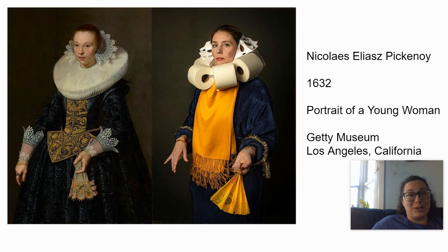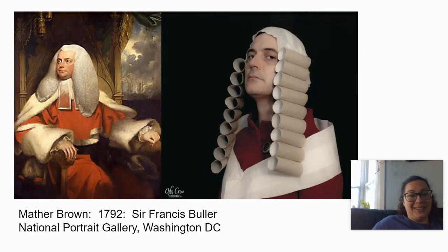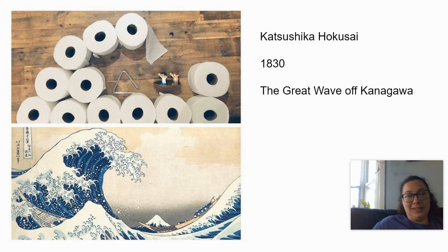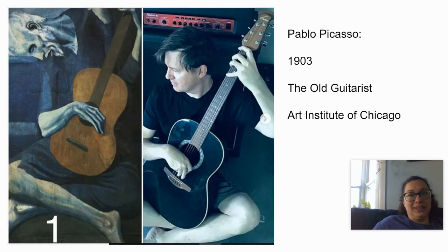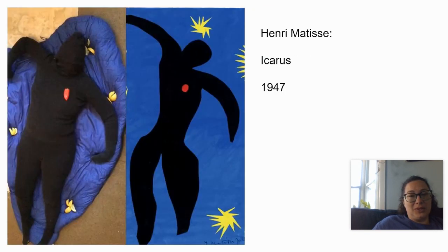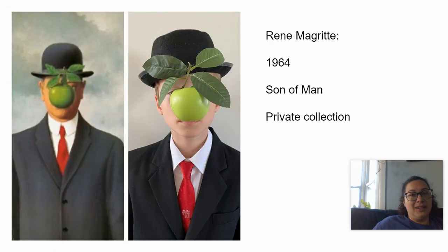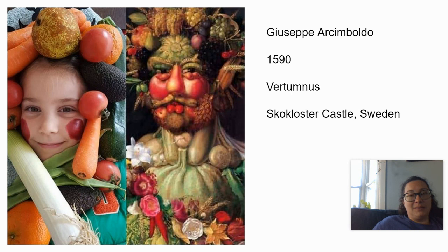This one's funny — using toilet paper is the big thing. Nicolai Elias Picanoy, Portrait of a Young Woman. Sir Francis Butler using toilet paper rolls. We've got Hokusai's The Great Wave using toilet paper. Keith Haring, created by doing different poses. Pablo Picasso's The Old Guitarist. Henri Matisse — that one's scary, they cover their face there. Rene Magritte. And some Giuseppe Arcimboldo — he's quite cool.